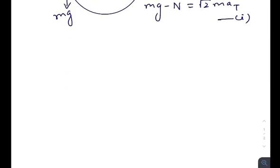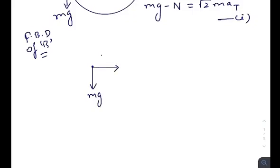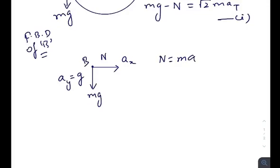The second equation comes from the free body diagram of bead B. There are two forces acting on it: mg downward and the normal force applied by the ring. These produce two types of acceleration — a vertical acceleration equal to g, and a horizontal acceleration created by the normal force.